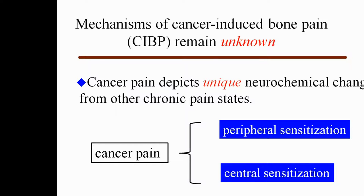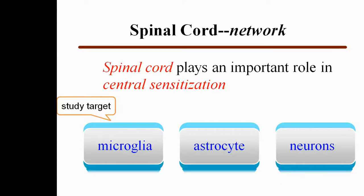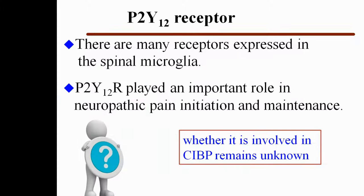As is known to all, CIBP is one of the most challenging clinical conditions because the mechanisms remain unknown. Cancer pain depicts unique neurochemical changes from other chronic pain states related to peripheral sensitization and central sensitization. The spinal cord plays an important role in central sensitization. Microglia, astrocytes, and neurons receive and cross-talk about harmful inflammation in the spinal dorsal horn. There are many receptors expressed in the spinal microglia, including the P2Y12 receptor. Recent studies show that activation of the P2Y12 receptor plays an important role in neuropathic pain initiation and maintenance. However, whether it is involved in CIBP remains unknown.